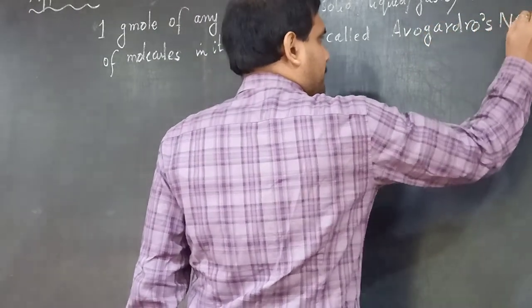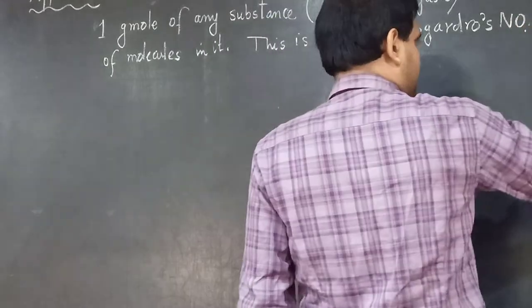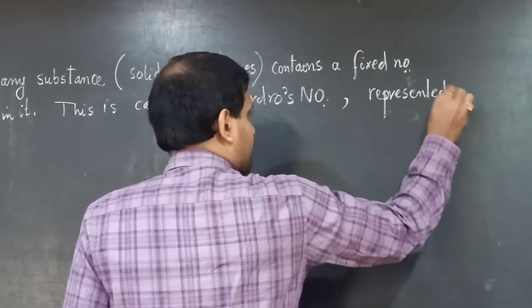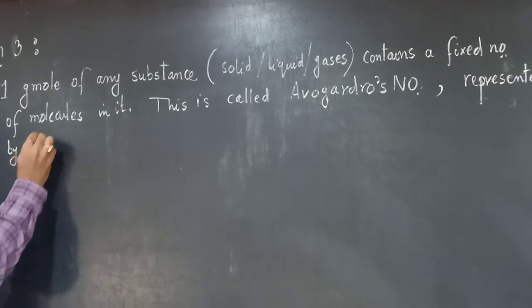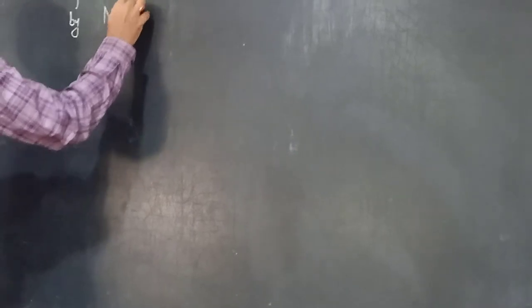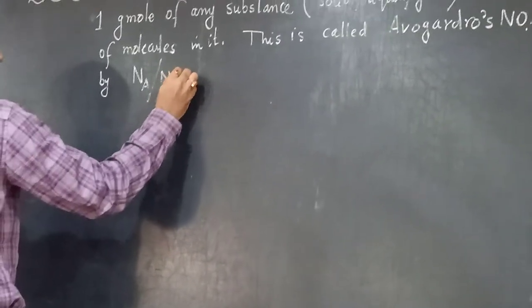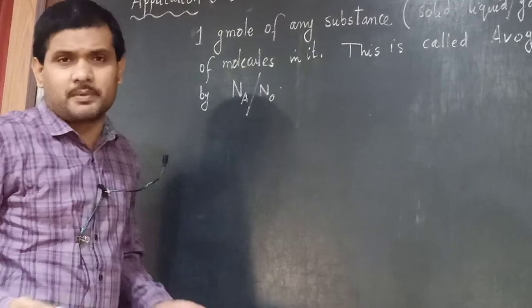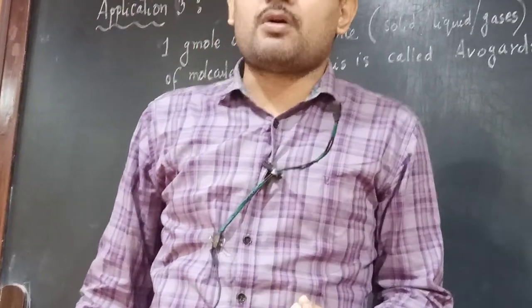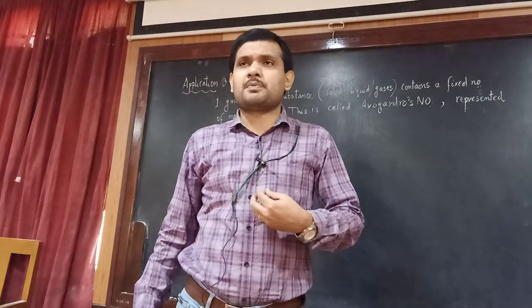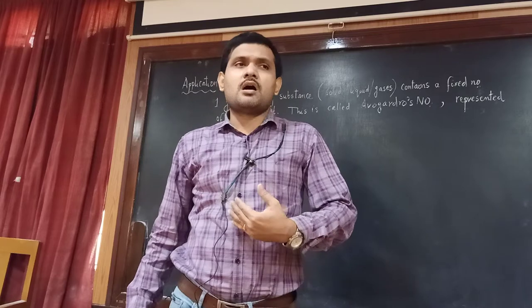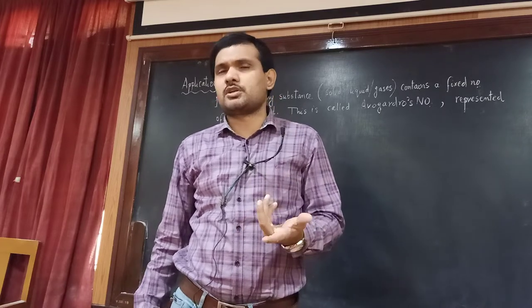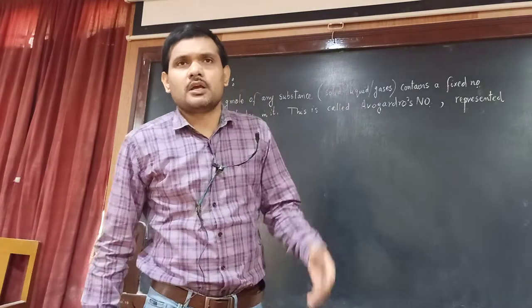This is called Avogadro's number, represented by N subscript A, or it can also be represented by N subscript 0. You just take one of the representations — either N_A or N_0 — and use it consistently throughout your answer script.